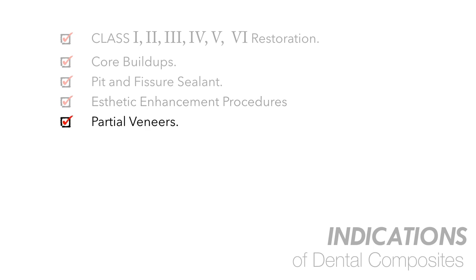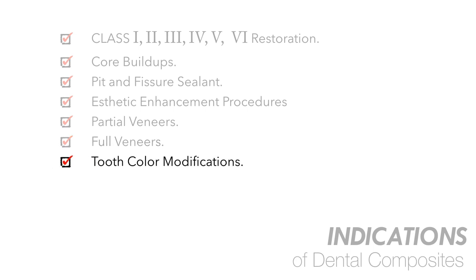For partial veneers, if there is discoloration such as brown or white spots, composite can be used to modify tooth color. In diastema closures, composite is the modern choice — patients with spacing in anterior teeth can have spaces closed with white-colored restorative material, as an alternative to orthodontic treatment.